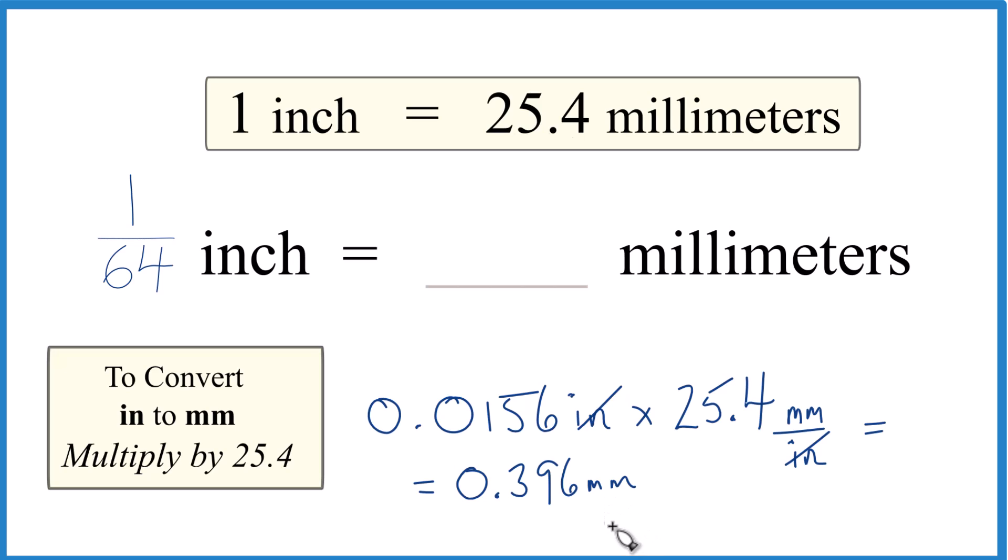Probably practically, you would round that to 0.40. Let's round it and say that 1/64th of an inch equals 0.40 millimeters. So that's a little bit rounded, but probably more useful.